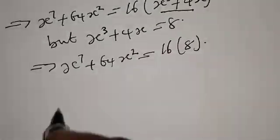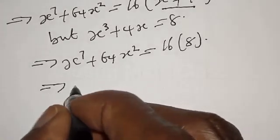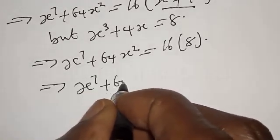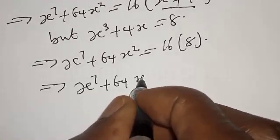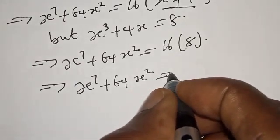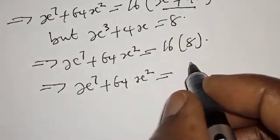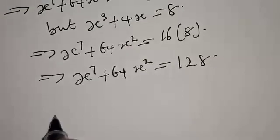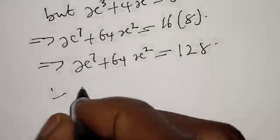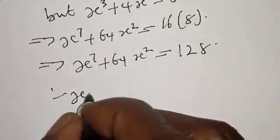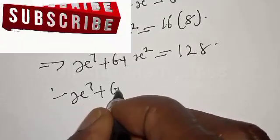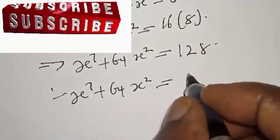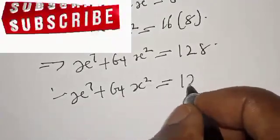Then this implies that s raised to the power 7 plus 64s squared would be equal to 16 times 8, replacing s³ + 4s with 8. That is 16 times 8, which equals 128. Therefore, our final answer is s raised to the power 7 plus 64s squared is equal to 128.